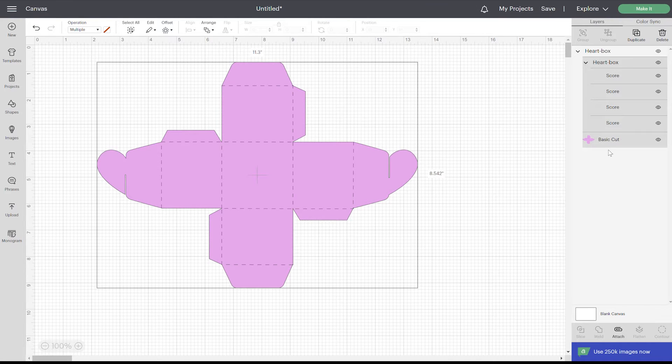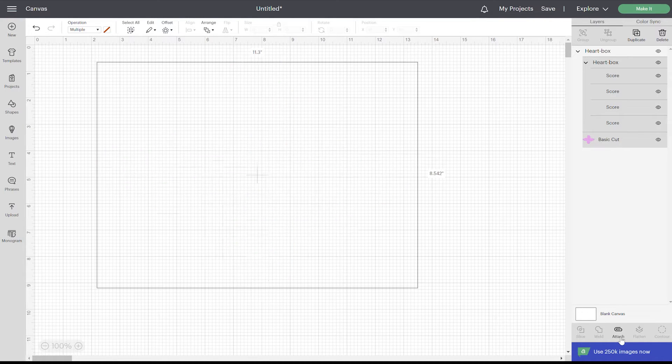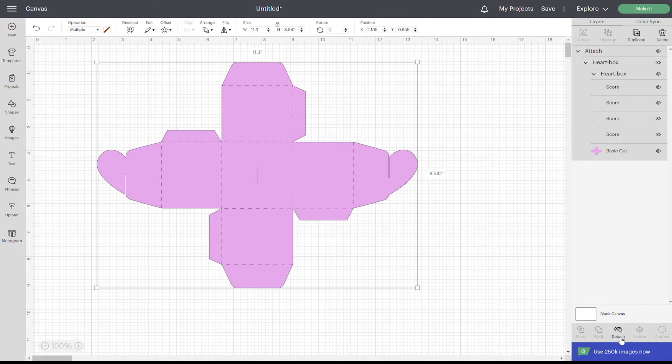Make sure that you attach these score lines to your box. Select all of your layers. You can select multiple layers together by holding down shift while you select them. Then attach them. That way your Cricut knows exactly where to score and cut. This is all you need to do and this box is ready to go.